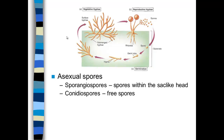Many spores are asexual in molds. These are called sporangiospores — those with a sac-like head. Sporangiospores are what we saw with Rhizopus, the pink-stained fungus. And conidia spores are free spores that are released, like those we saw in Aspergillus, which was stained blue on the previous slide.